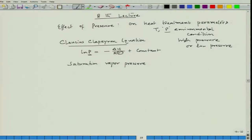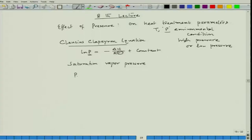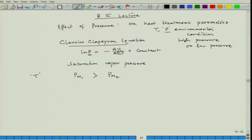This is important because if we compare two materials at the same temperature and find that the saturation vapor pressure of metal 1 is greater than that of metal 2, it means metal 1 tends to form vapor more easily. To maintain that higher saturation vapor pressure, we need more molecules in the vapor phase of that metal. Both metal 1 and metal 2 can be in solid or liquid state.